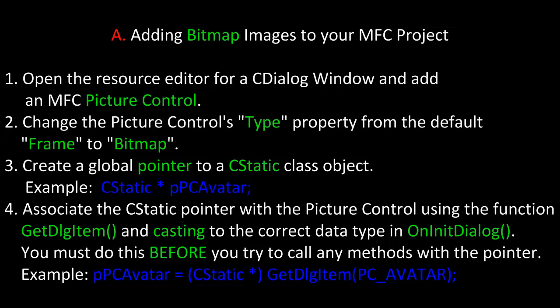Next, associate the CStatic pointer with the picture control using the function GetDialogItem and casting it to the correct data type in OnInitDialog. Remember, you must do this before you call any methods with the pointer. Otherwise, you'll get a null pointer exception and it will crash.